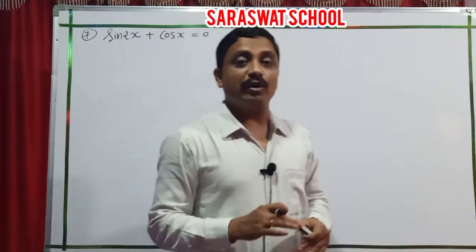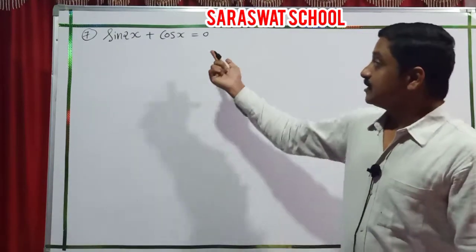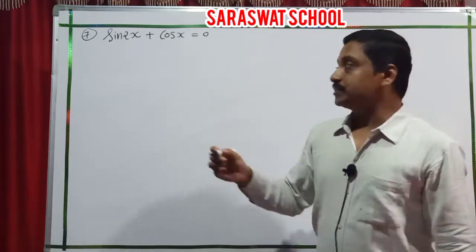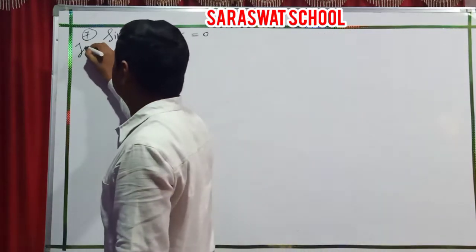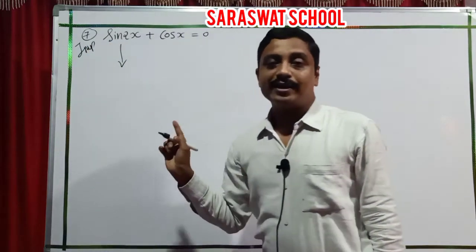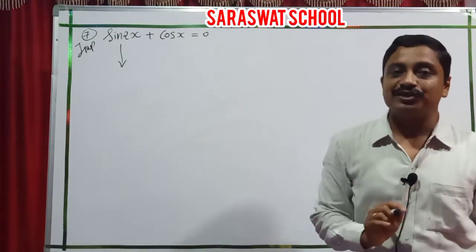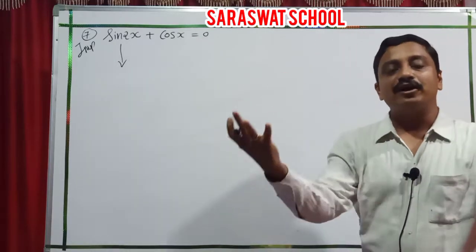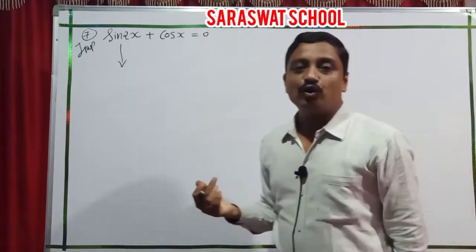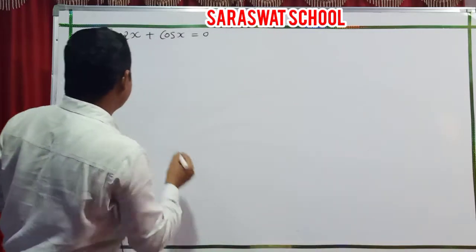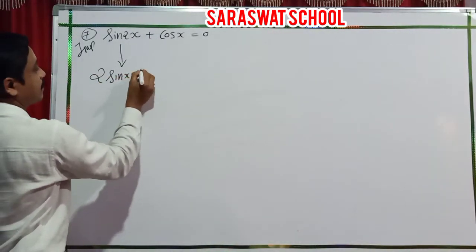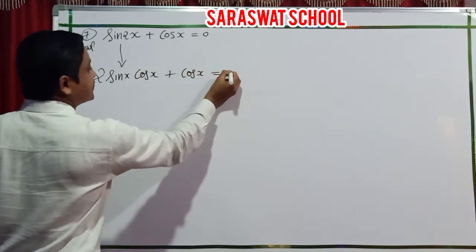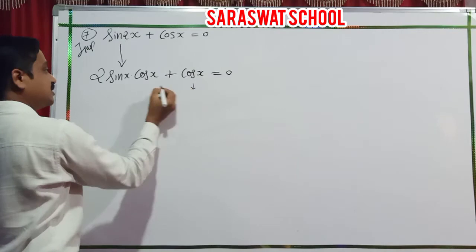Question 7 — an important exam-level question: sin 2x plus cos x equals 0. The angles are not the same — 2x and x. I convert to the same degree using the sin 2x formula: sin 2x equals 2 sin x cos x. So 2 sin x cos x plus cos x equals 0.